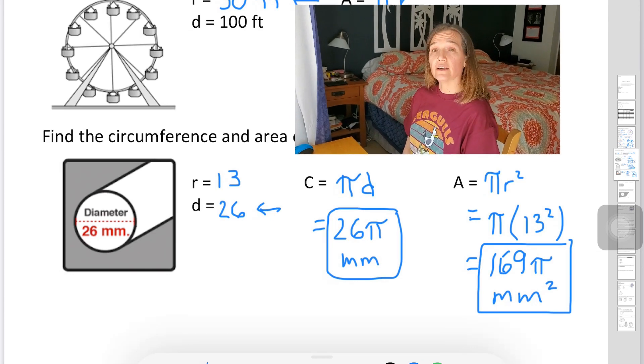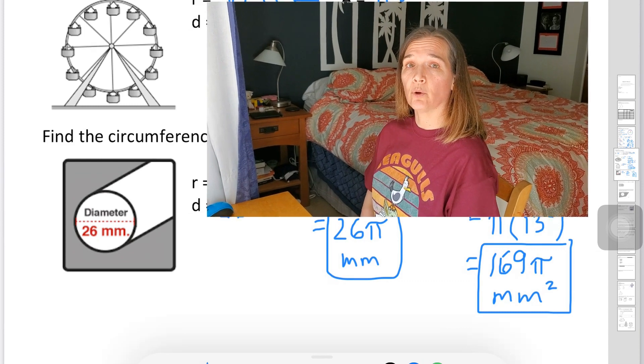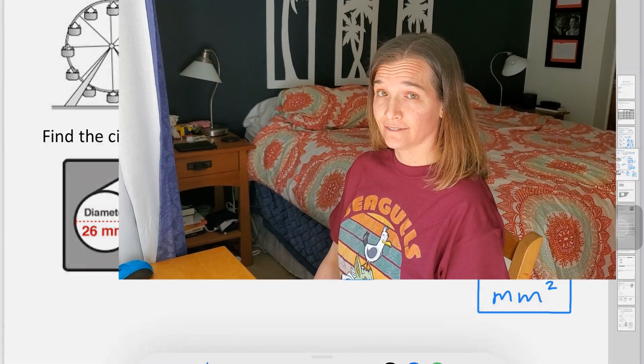So that's another example using just pi as pi. So there it is, finding area, circumference of a circle. Hopefully you've got it all down. See you later.